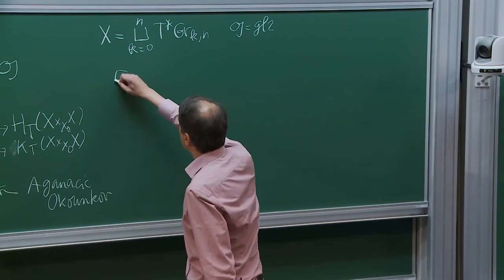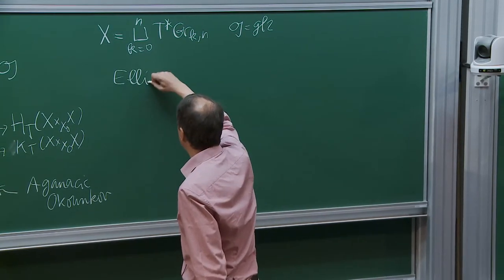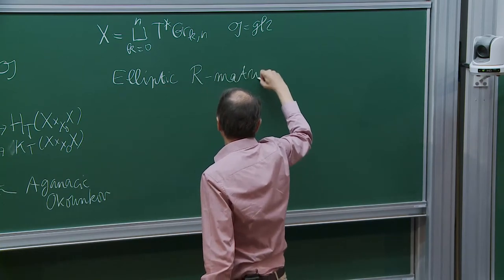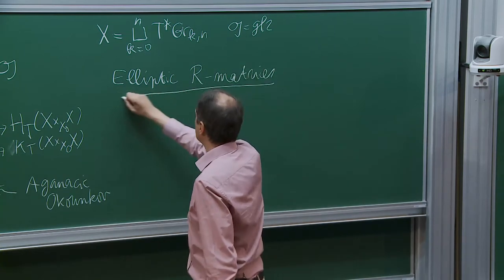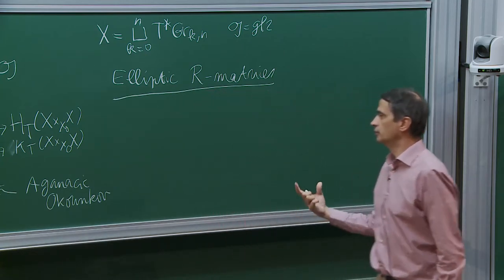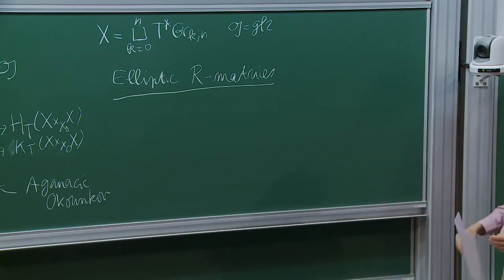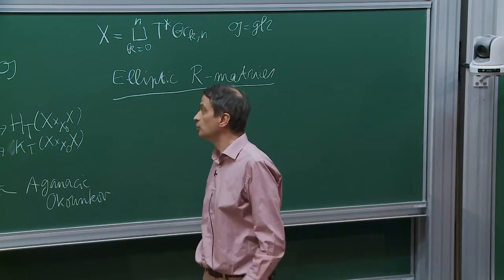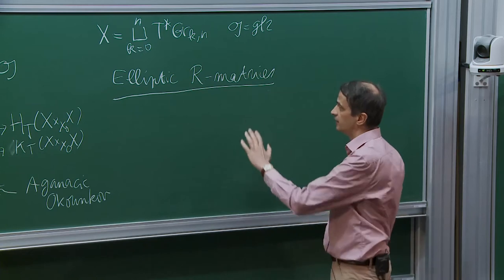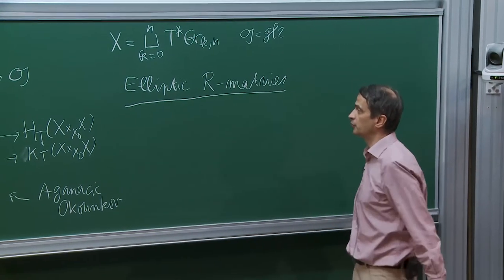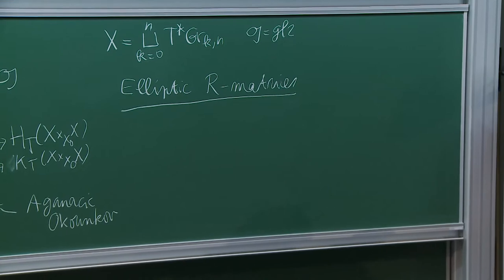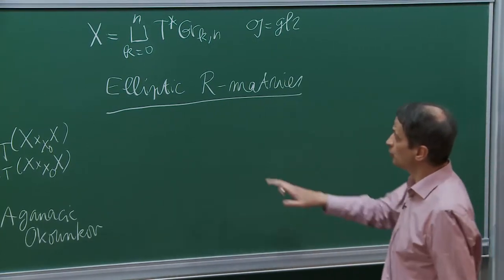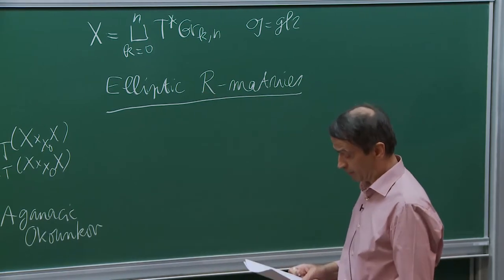Let me say a few words about elliptic R-matrices. The R-matrix is the basic building block in the representation of elliptic quantum groups, and at least in the GLN case, you can describe everything in terms of R-matrices. This is one aspect of representation theory of quantum groups and I will mostly concentrate on this aspect.